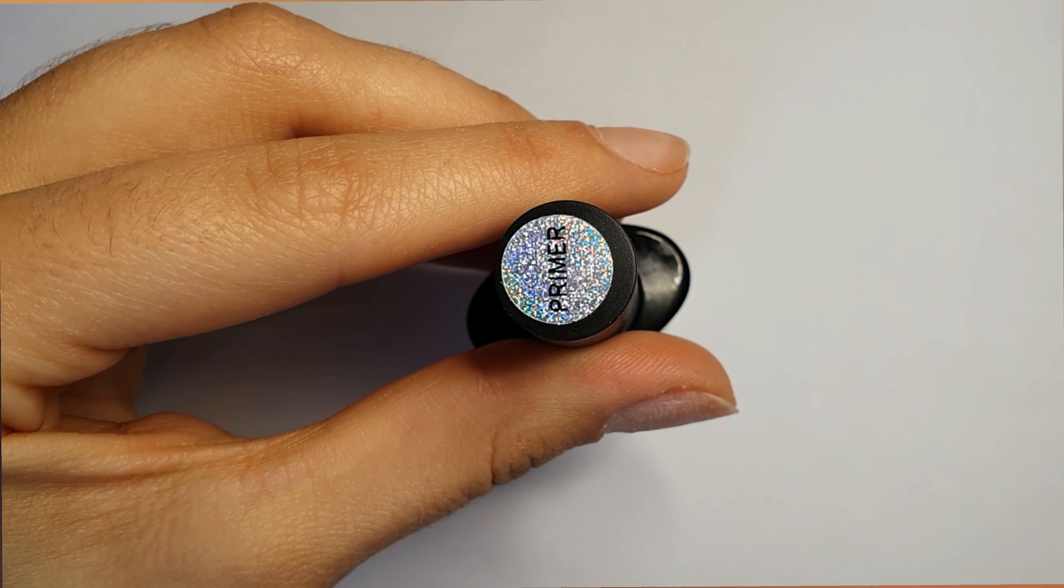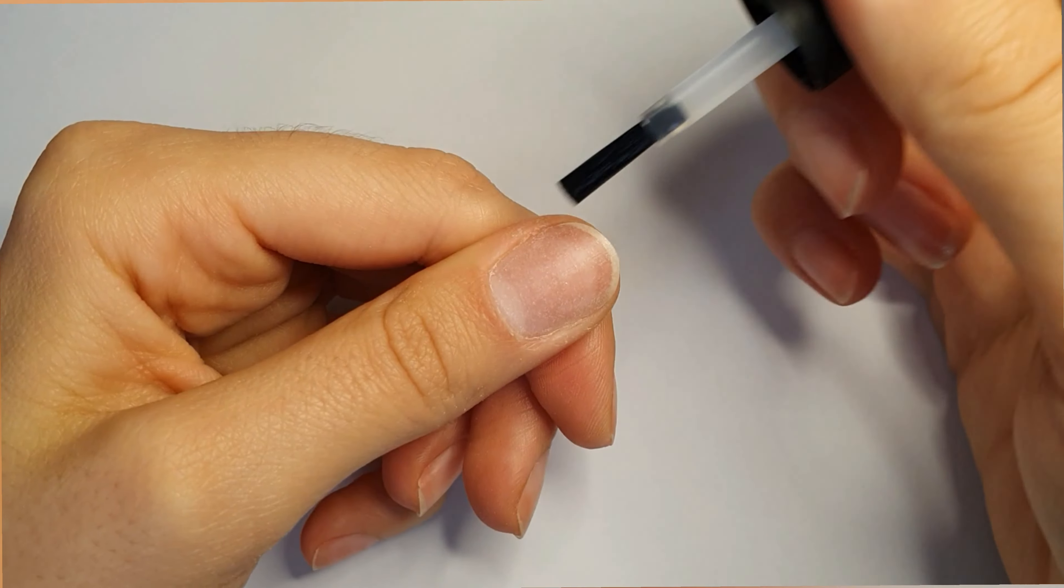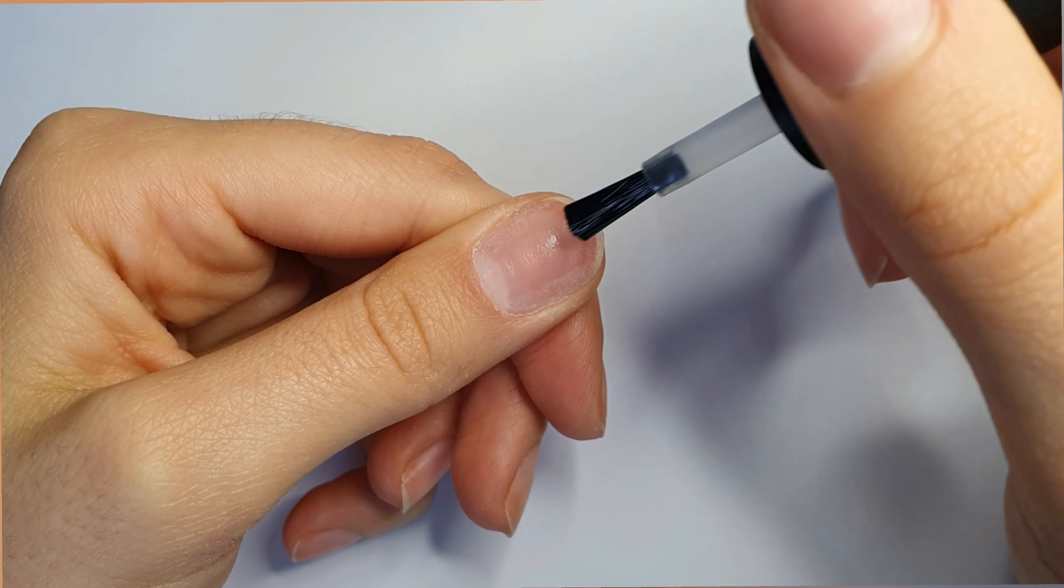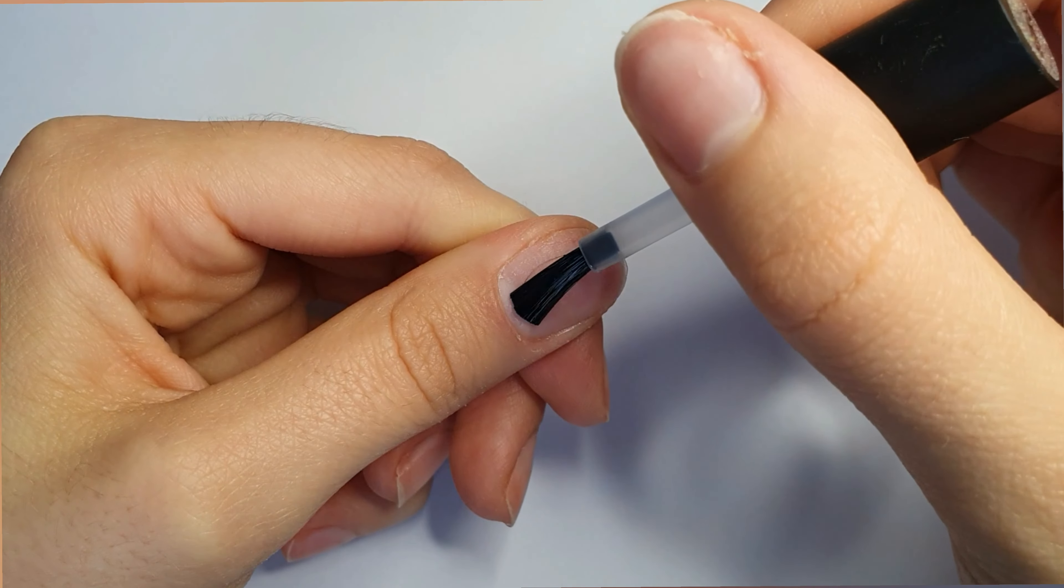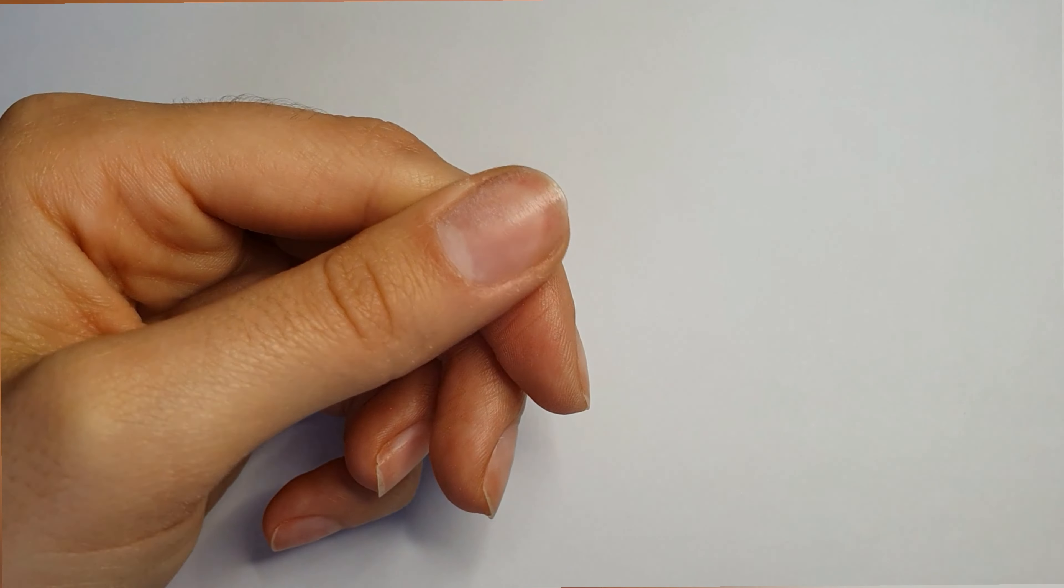Now I am going to use primer. It has a lot of benefits like preventing your nail from molding. Apply it as you would polish your nails.